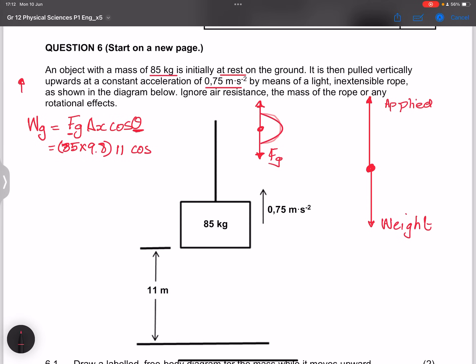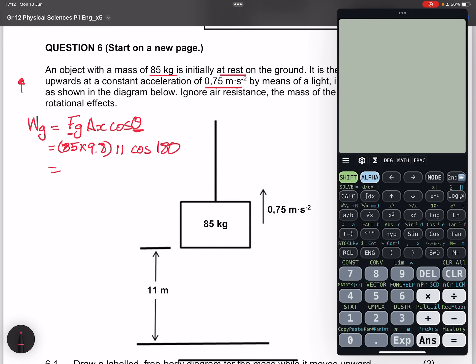So that force is acting in the opposite direction, so the angle between the two is 180 degrees, so that's cos of 180. So that's 85 times 9.8 times 11, and that's the cos of 180, of course that makes it negative. So the work done by gravity is negative 9163 joules.